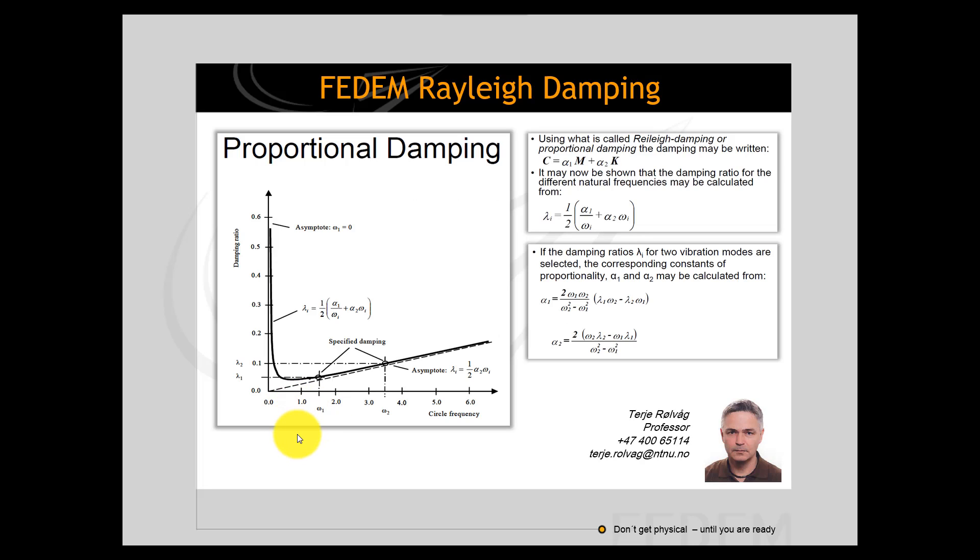Here you see the formulas for the Rayleigh damping. Alpha 1 is the mass proportional damping ratio and alpha 2 is the stiffness proportional damping ratio. As you can see, alpha 2 damps high frequency vibrations while alpha 1 damps out low frequencies. And here you can see how this relates. This is the damping ratio for a given mode and these are alpha 1 and alpha 2 factors.